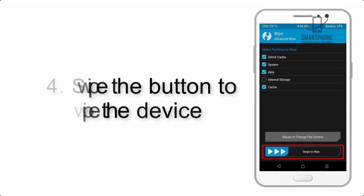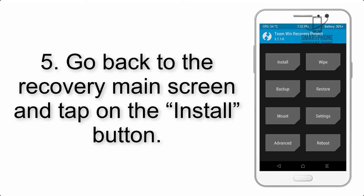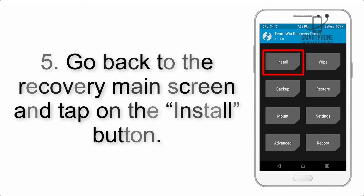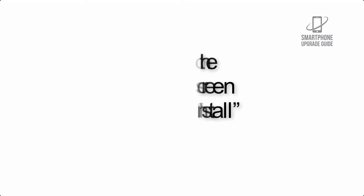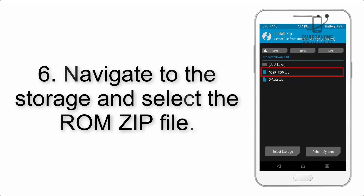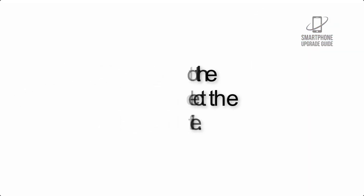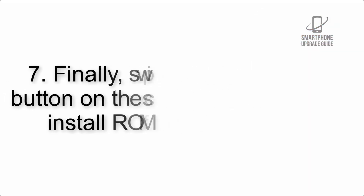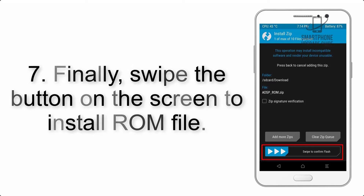Step 4: Swipe the button to wipe the device. Step 5: Go back to the recovery main screen and tap on the Install button. Step 6: Navigate to the storage and select the ROM zip file.